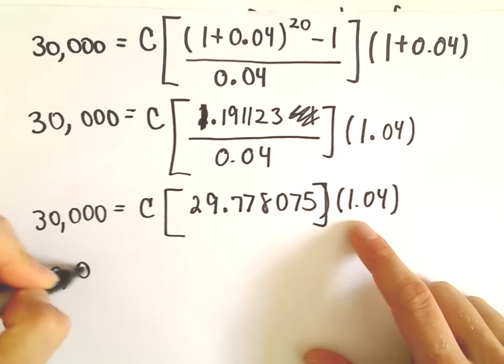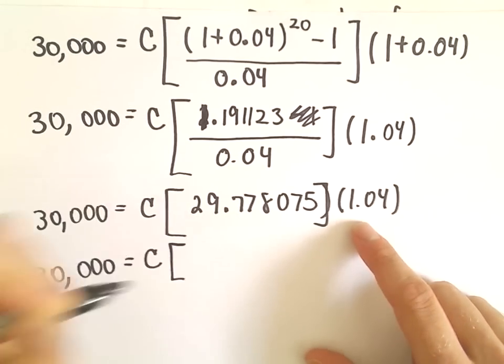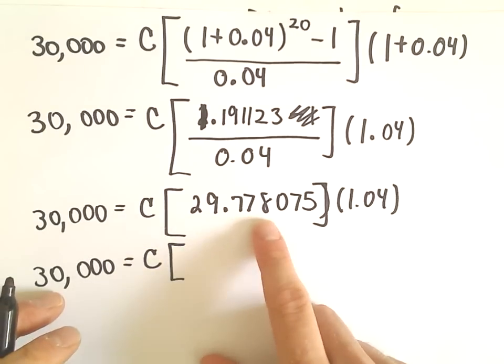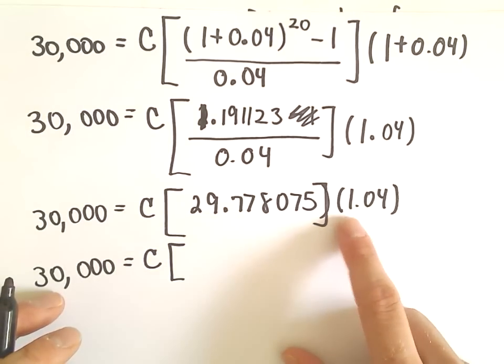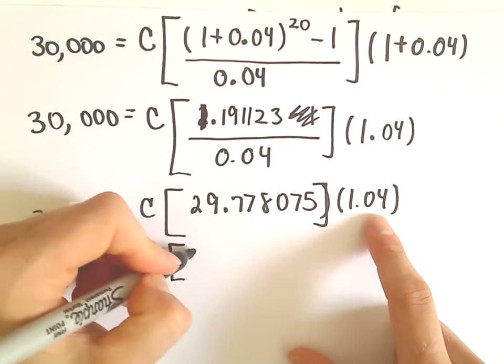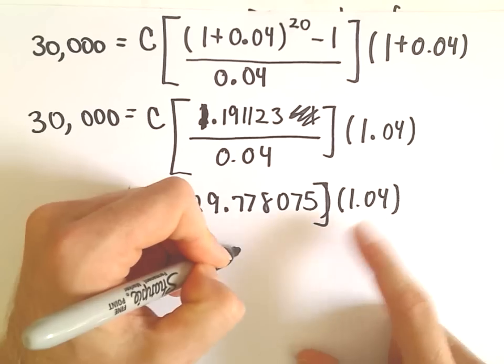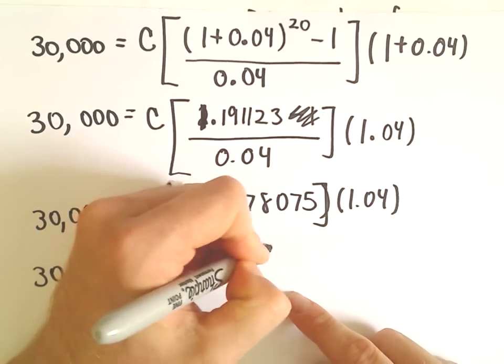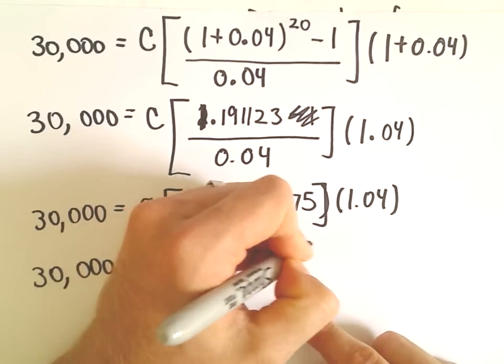So the next thing I'm going to do is the multiplication. When I take 29.778075 and multiply it by 1.04, I'm getting this to equal 30.969198.